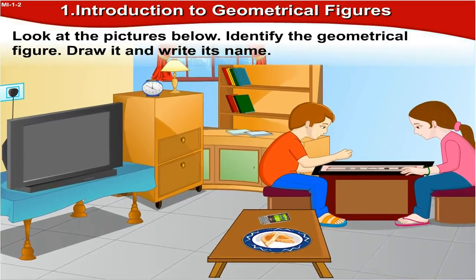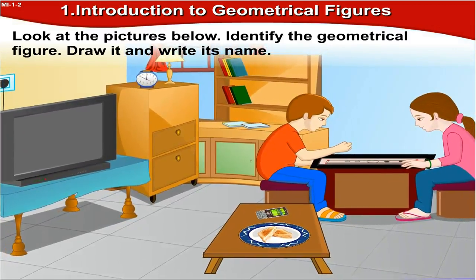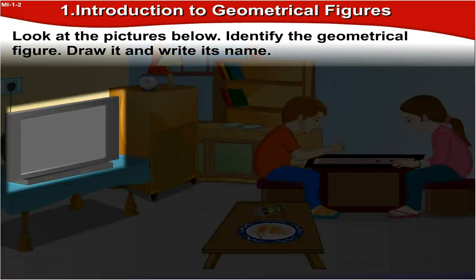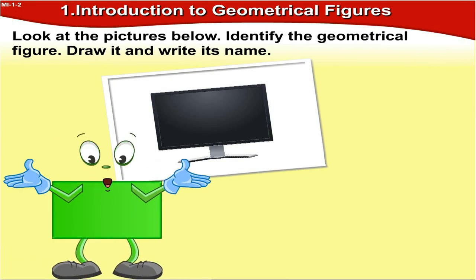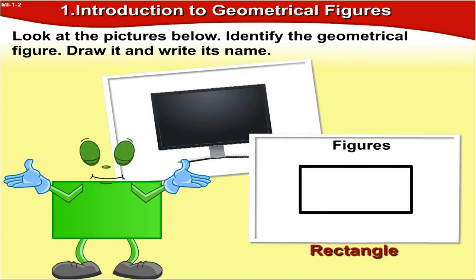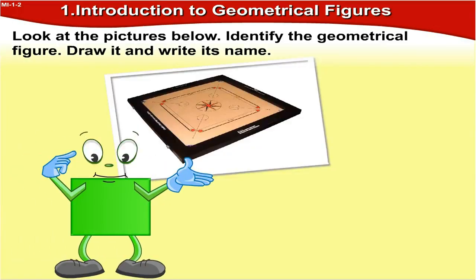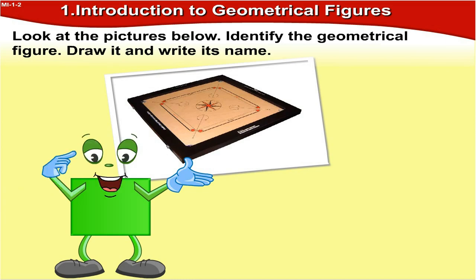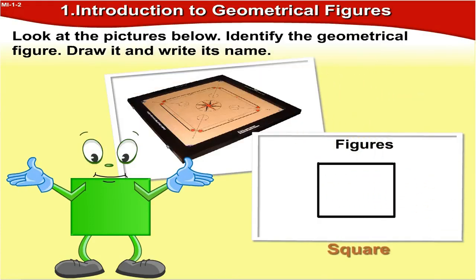Look at the pictures below. Let us draw a rectangle. Now this is a picture of a TV. The figure has a square as its geometrical figure. So we will draw a square over here. The name of the figure is square.